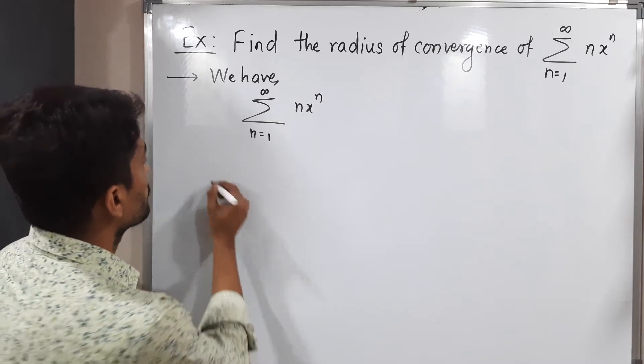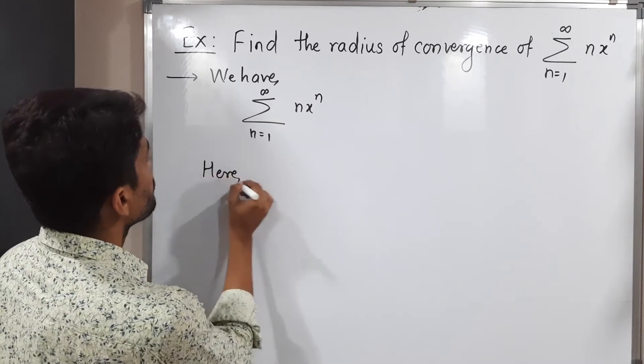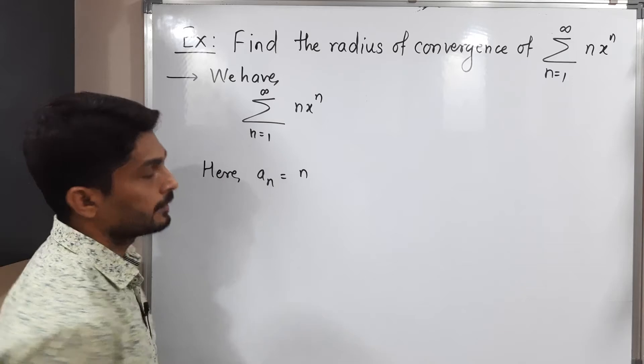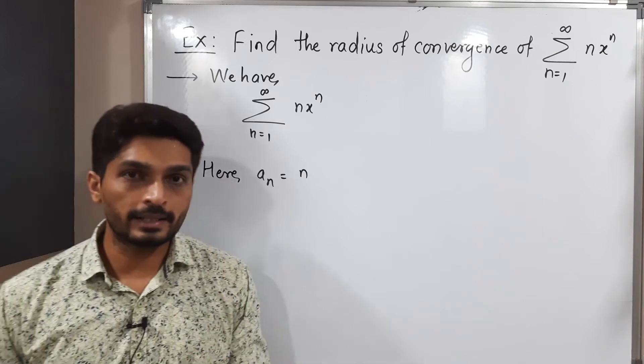Let us write a_n here. Here a_n means coefficient. What is the coefficient we have? n. And we have to find its radius of convergence.